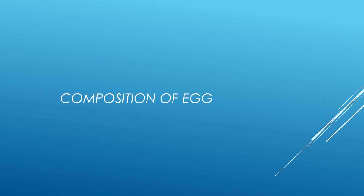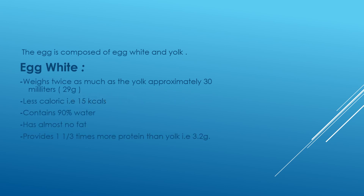Composition of egg: The egg white weighs approximately 30 milliliters. It is low in calories — almost 15 kilocalories in one medium egg. It contains almost 90 percent water, has almost no fat, and it provides one-third more protein than the yolk, that is 3.2 grams. So the egg white is actually rich in protein.